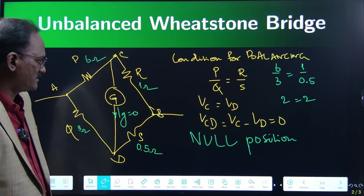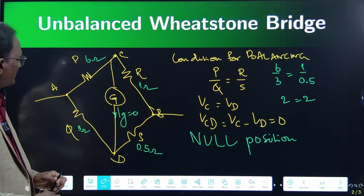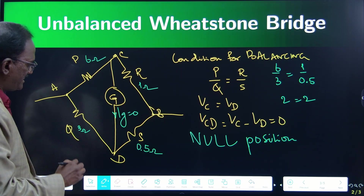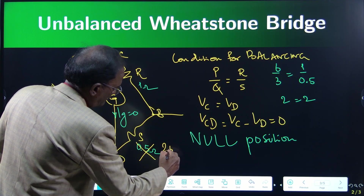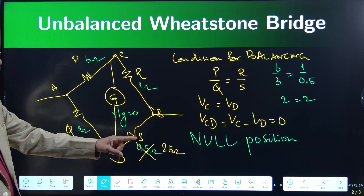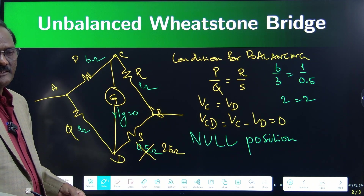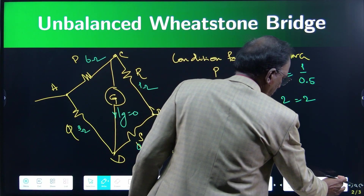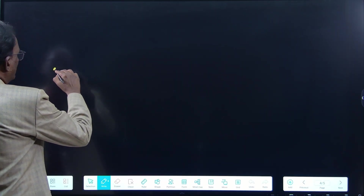This is the balanced Wheatstone bridge. Now, instead of S = 0.5 ohms, I am going to change it to 2.5 ohms. Now 6/3 = 2 but 1/2.5 = 0.4, which is not equal. Since the condition is not satisfied, this Wheatstone bridge is now an unbalanced Wheatstone bridge.